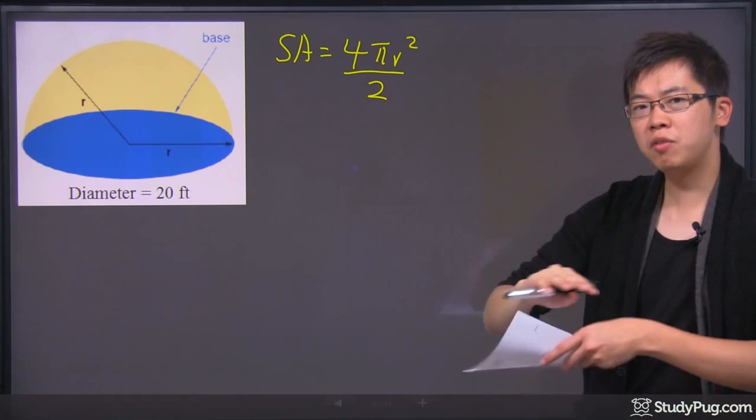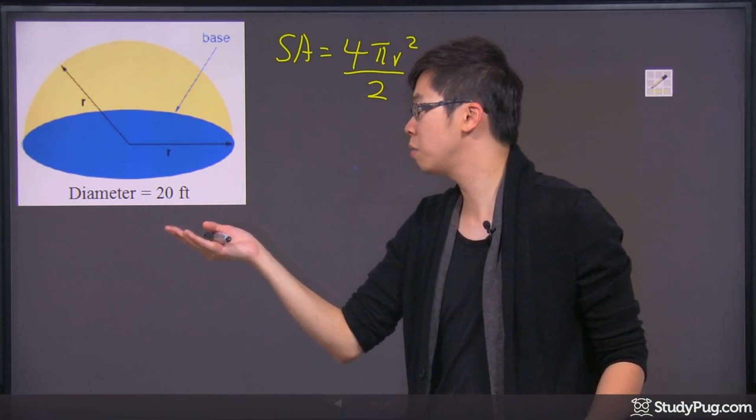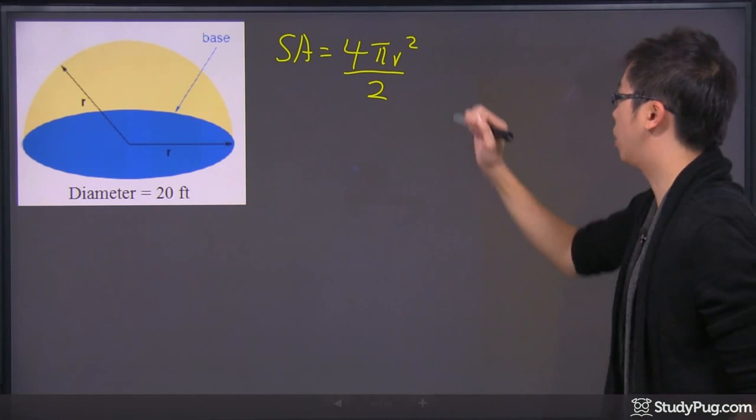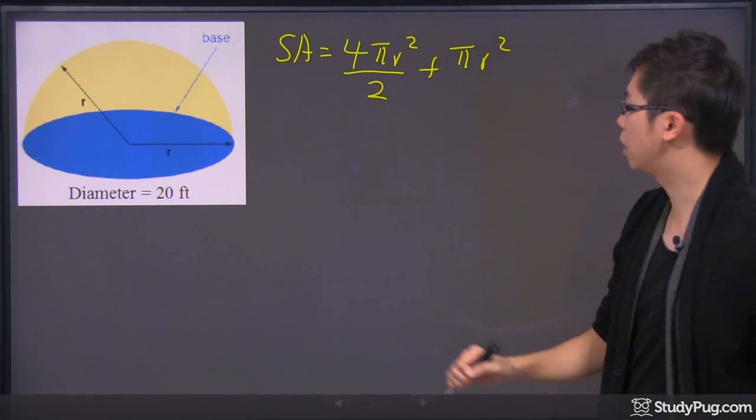But remember, even if you cut it in half, the bottom part becomes the surface area of itself already, right? So you have to add another one right here, which is the πr² on the side.